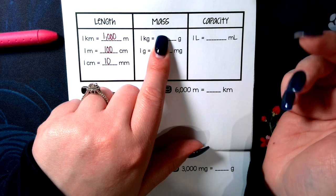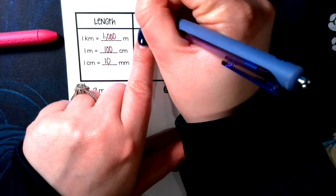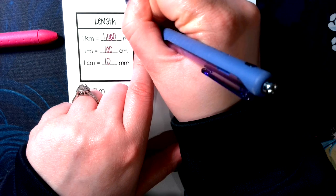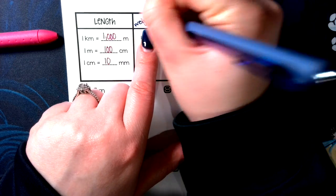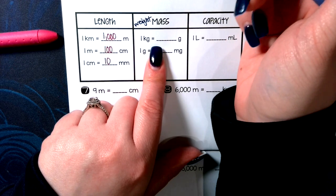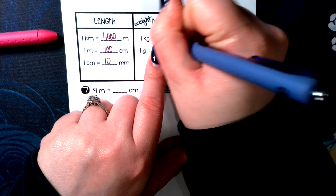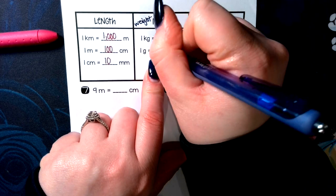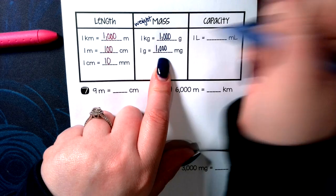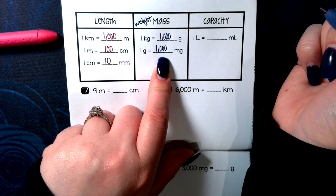For mass, that's weight. Mass is weight, how heavy things are. One kilogram is 1,000 grams. One gram is 1,000 milligrams. Easy enough to remember there.